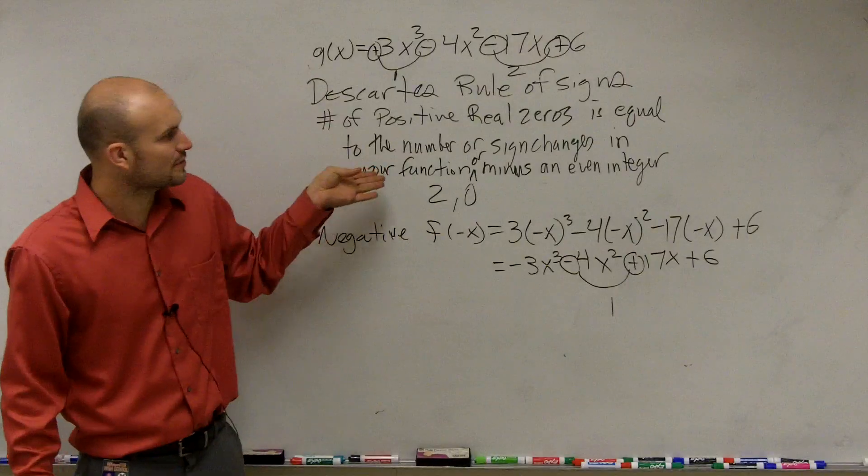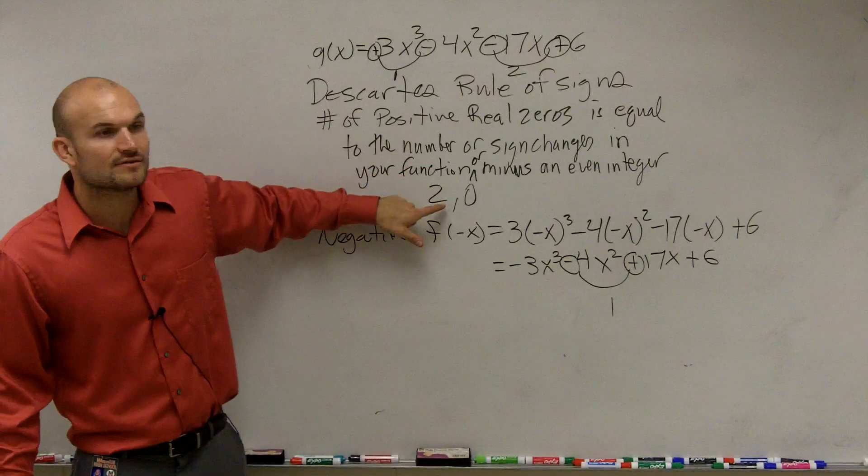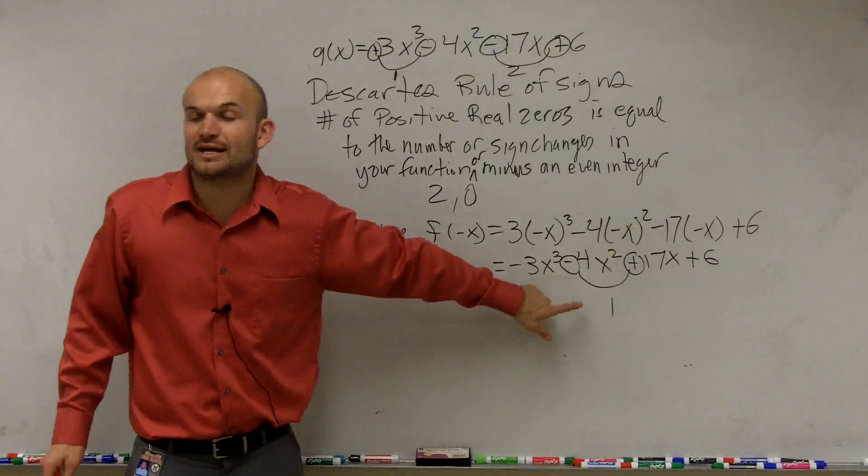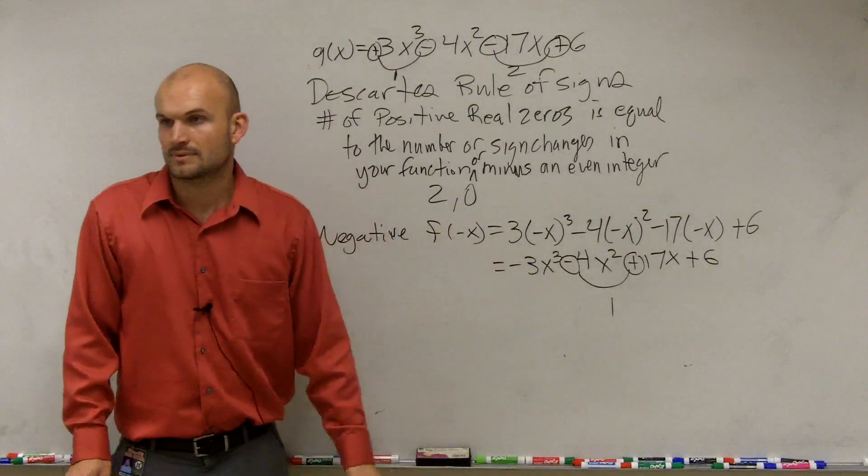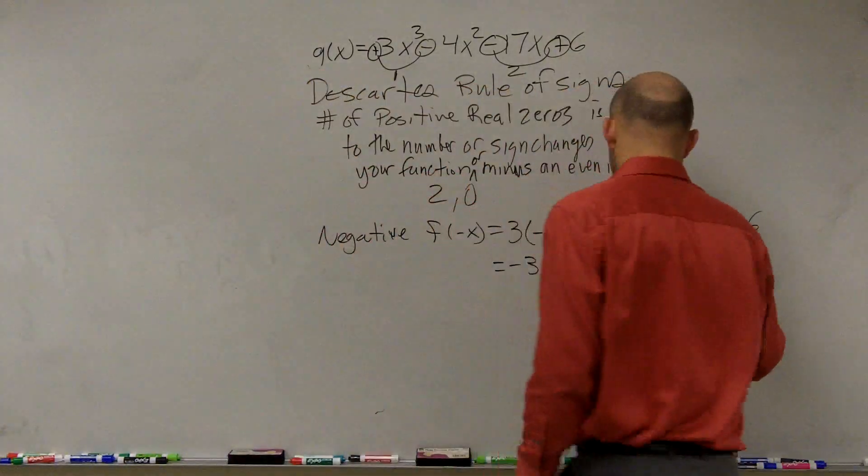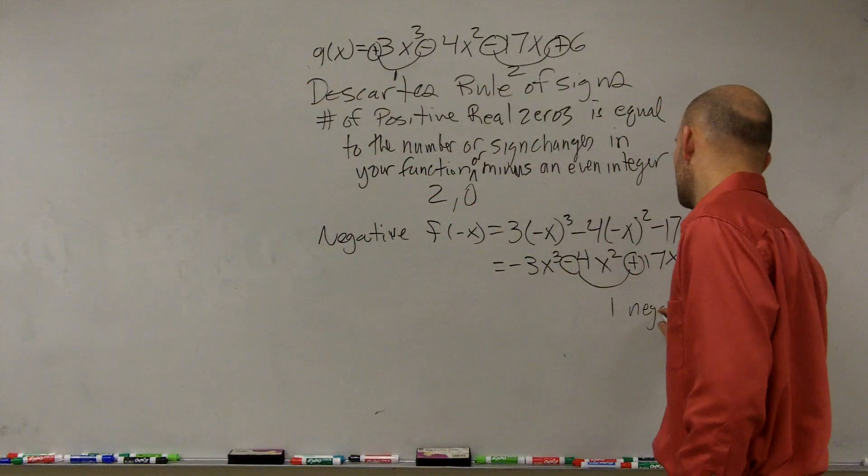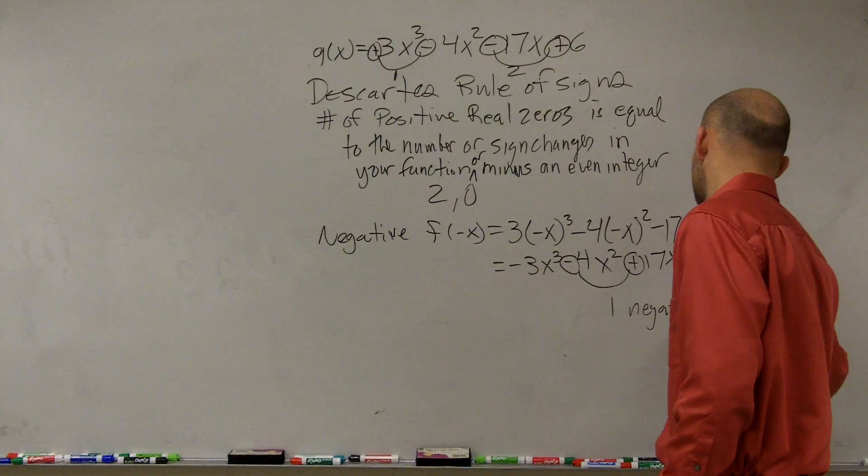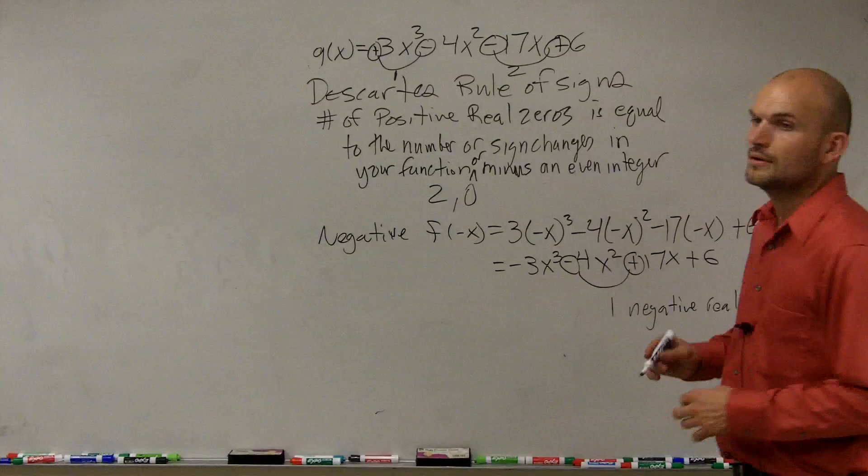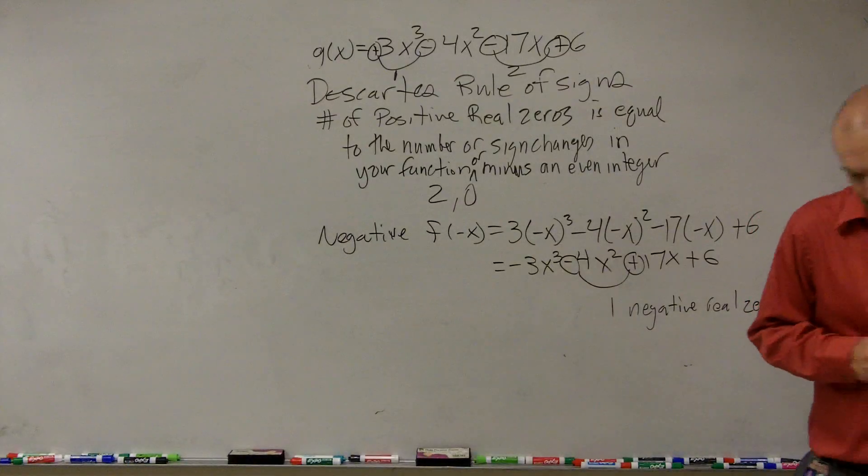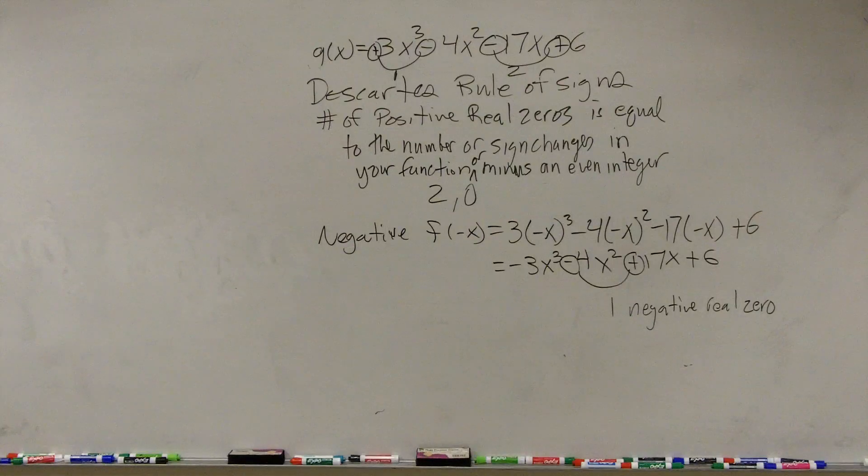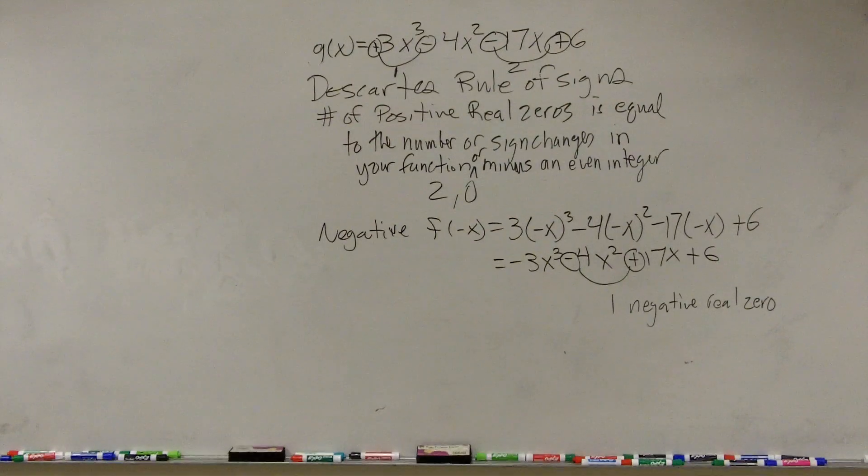we could say here there is, so for positive real zeros, we have 2 or 0. But for the negative, we have, we're guaranteed to at least have 1. So there's 1 negative real zero. So those are your two rules.